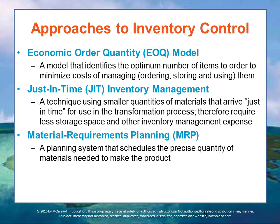Pulling all of this together, we have a process called Materials Requirement Planning, or MRP — a major information technology innovation over the last few decades that is used to schedule the precise quantities of materials needed to make the product. The basic components are the master production schedule, the bill of materials, and the inventory status file. These are often used in conjunction with the Just-in-Time Inventory Management System. MRP is a larger-scale system that is often used with Just-in-Time Inventory on the production floor.